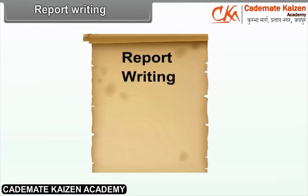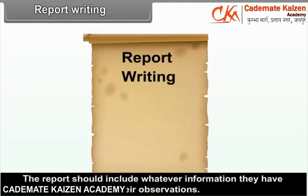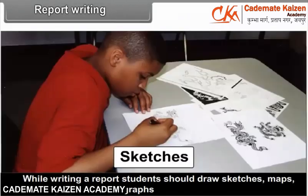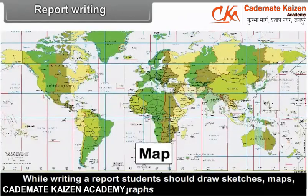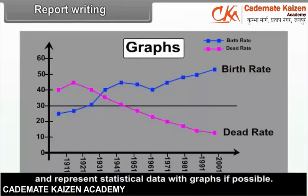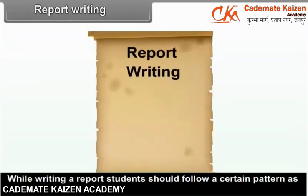Report writing: the report should include whatever information they have collected along with their observations. While writing a report, students should draw sketches, maps, drawings, paste photographs, and represent statistical data with graphs if possible. Students should follow a certain pattern as given below.